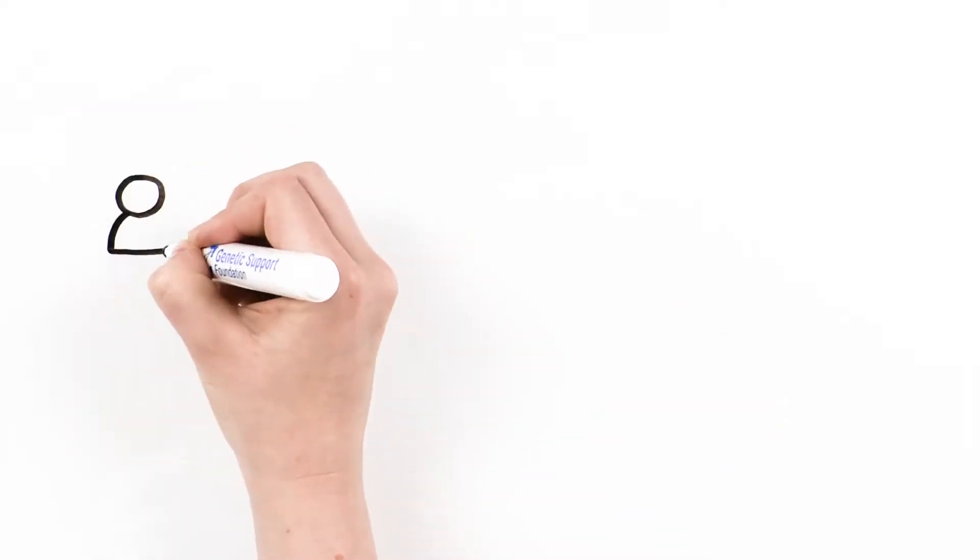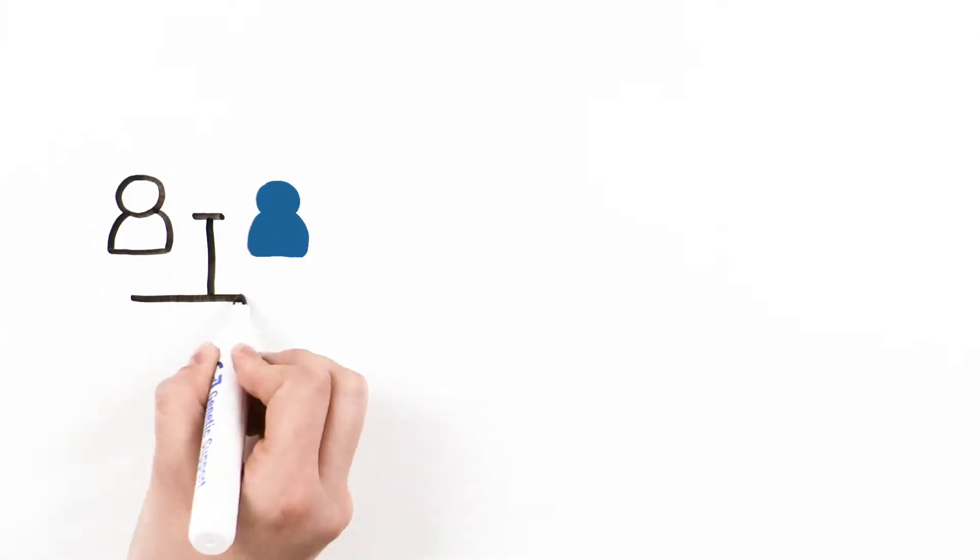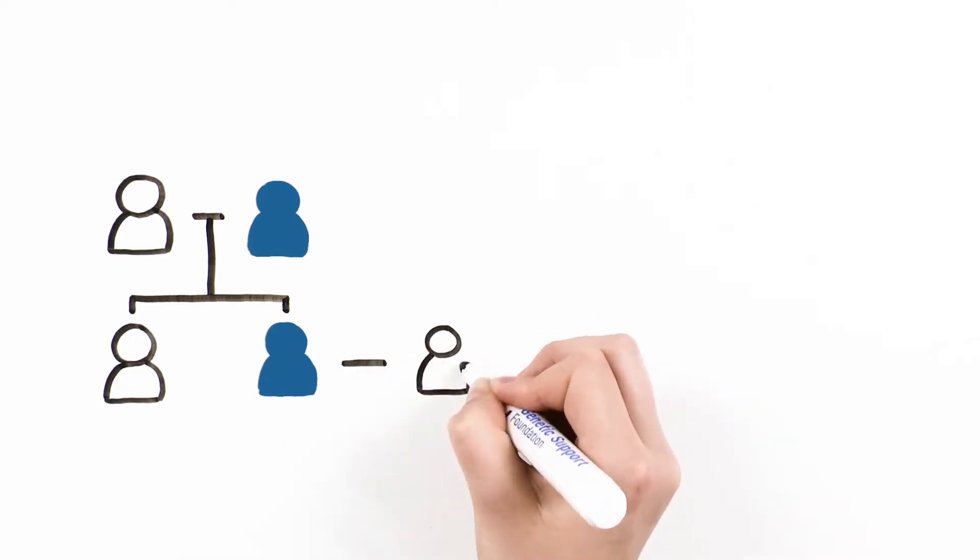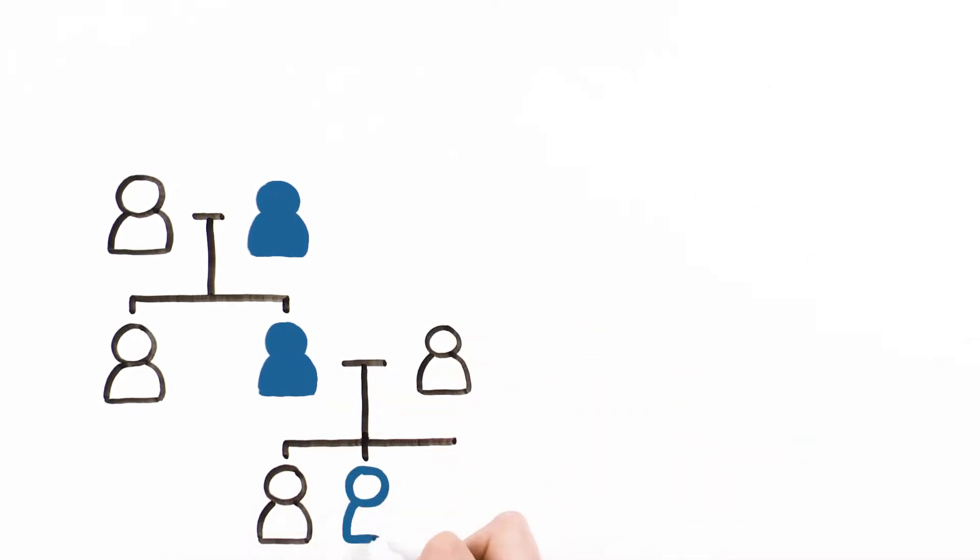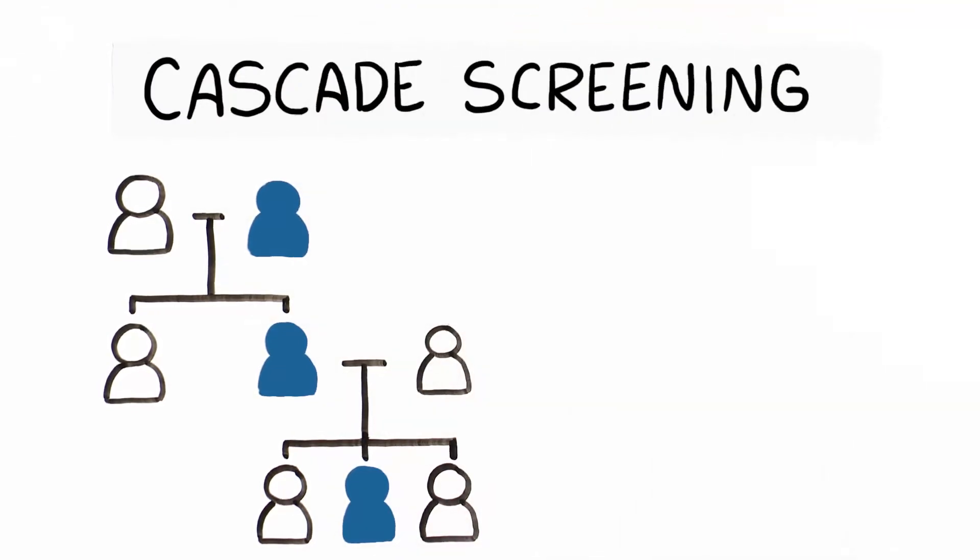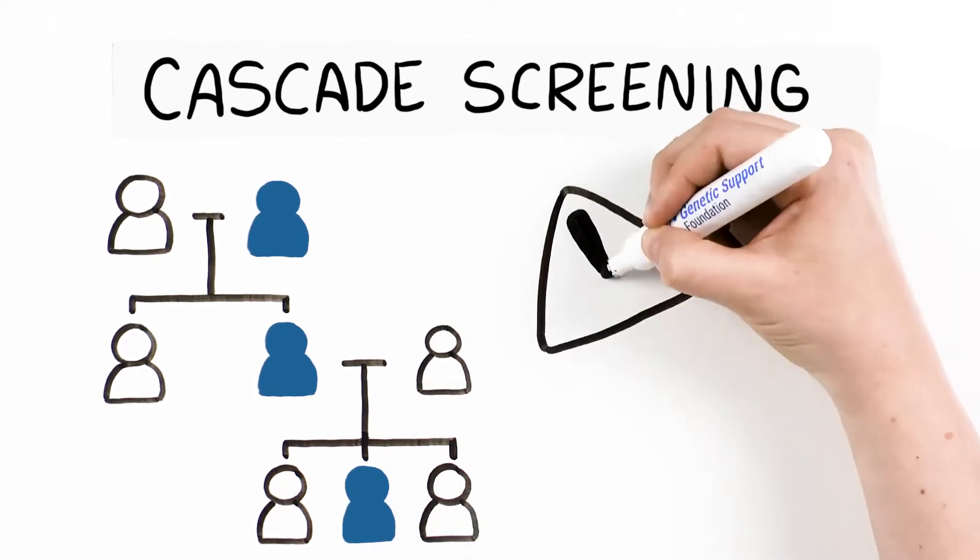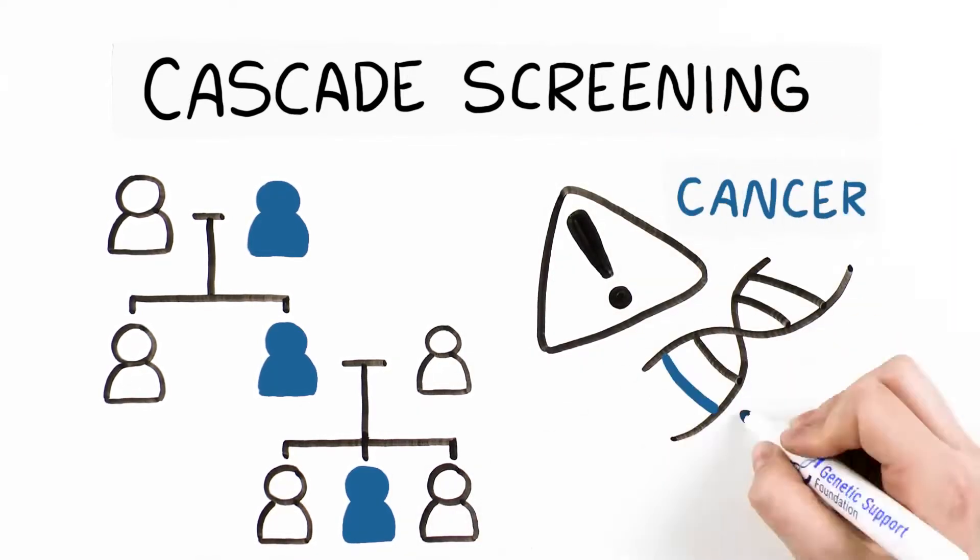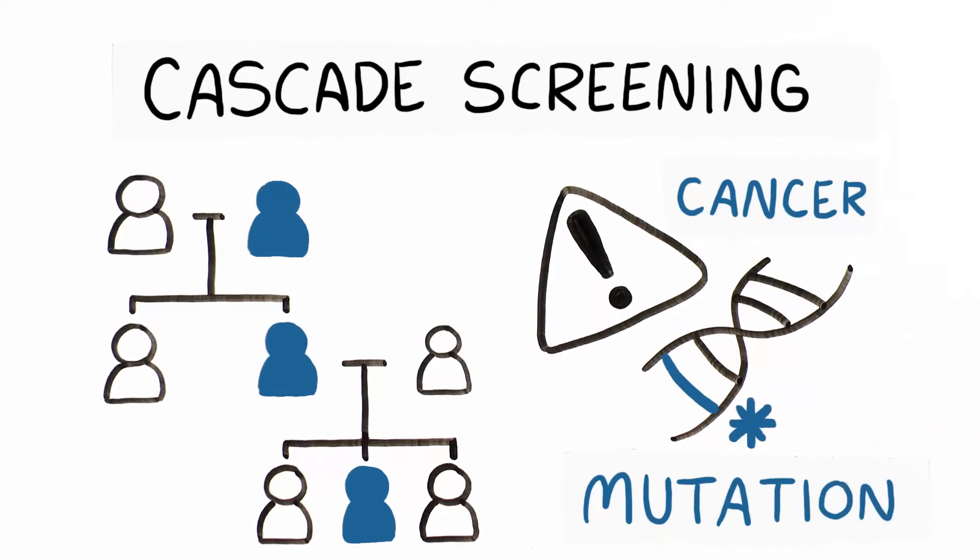What is cascade screening? Some genetic conditions can be passed from parent to child, generation to generation, affecting multiple family members. Cascade screening simply means genetic testing of relatives of people who have inherited conditions. These conditions include inherited risk for certain types of cancer due to genetic mutations that are passed on in a family.